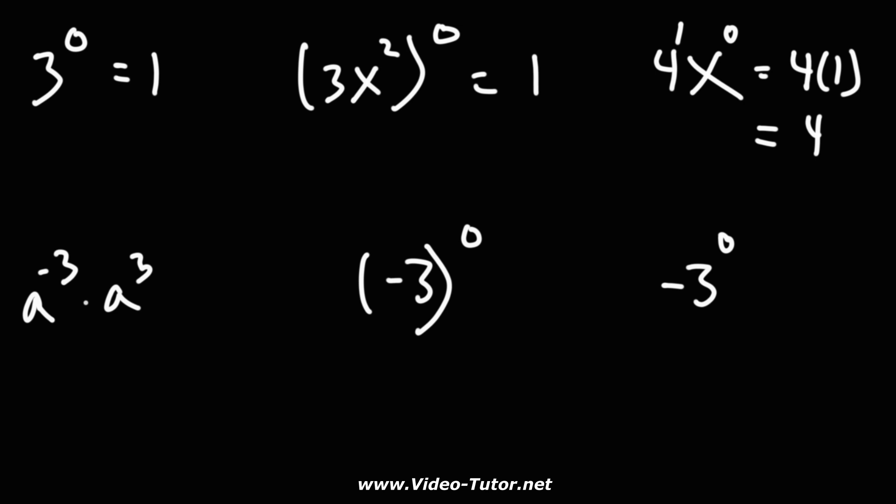Now, a to the negative three times a to the three. When multiplying, we can add the exponents. So this is a to the negative three plus three, negative three plus three is zero, and a to the zero is one.